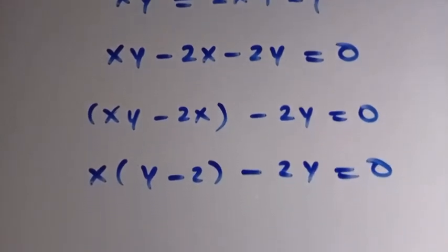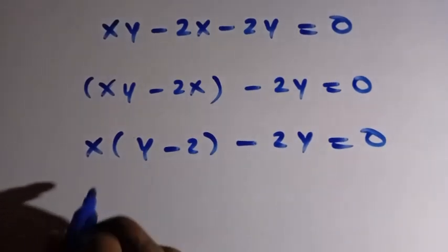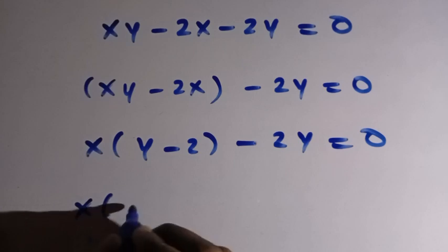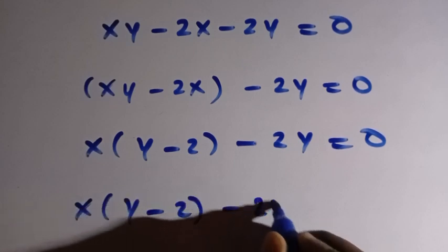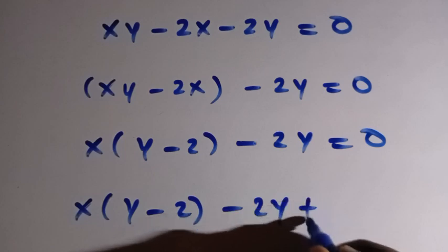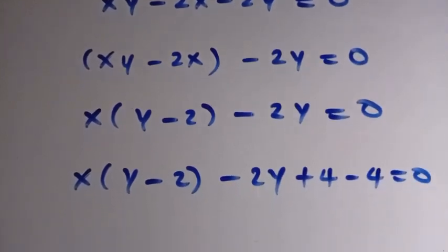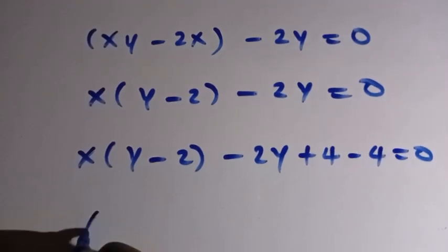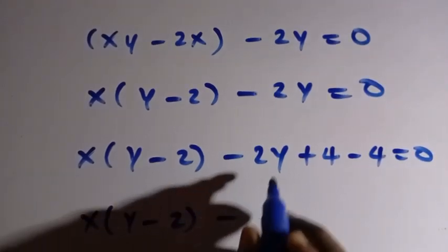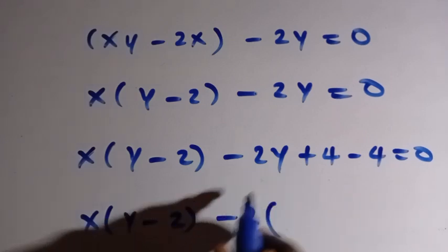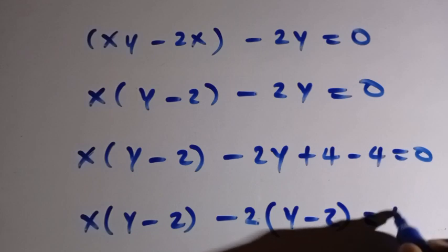So having this, suppose I add 4 and subtract 4 here. We can add this as x into bracket of y minus 2, minus 2y plus 4 minus 4 equals 0. Then we have x into bracket of y minus 2, minus 2y. If we combine this and factor out 2, then let's take 4 to the other side.